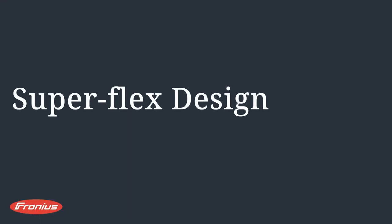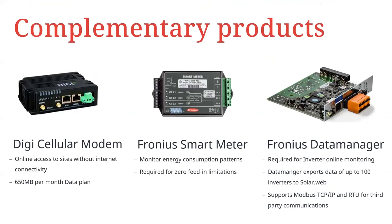A question came in: how does one data manager collect information from 100 inverters on a site? The inverters can be daisy-chained together to create an information path called the solar net loop. All data collected from each inverter is exported to the master inverter with the data manager card installed. From that data manager card, all packets of information go to the Solarweb servers back in Austria at Fronius headquarters. From Solarweb, you'll be able to access all of the site's information as well.